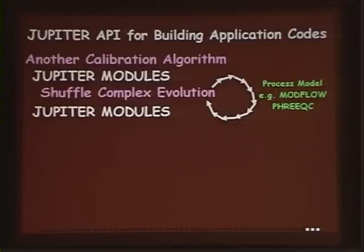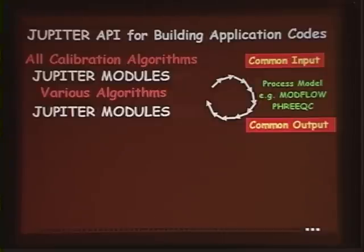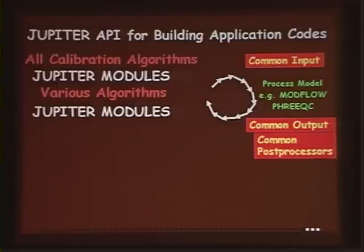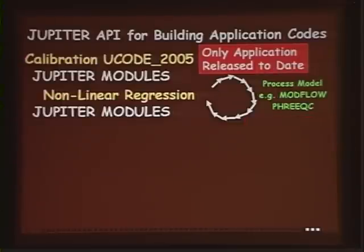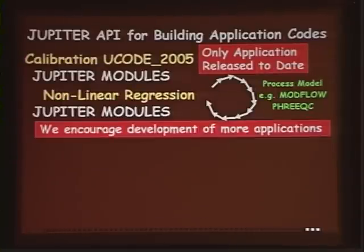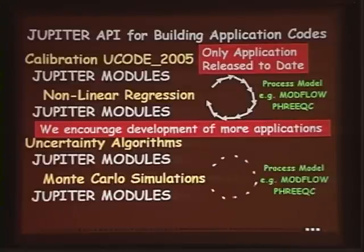No matter what calibration algorithm went in, they would all have common input and output and so they could use the common post-processors. The only application that's been released today is UCODE 2005, but we encourage development of more applications and not just calibration tools but also uncertainty modules.